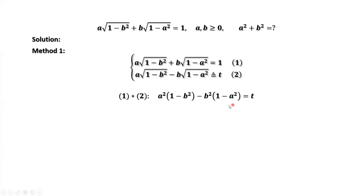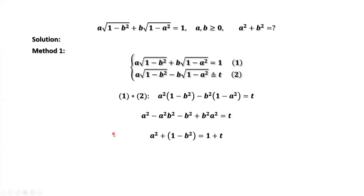Let's simplify the left-hand side. We get negative a squared b squared plus a squared b squared, which cancel. Then we have a squared minus b squared equals t.